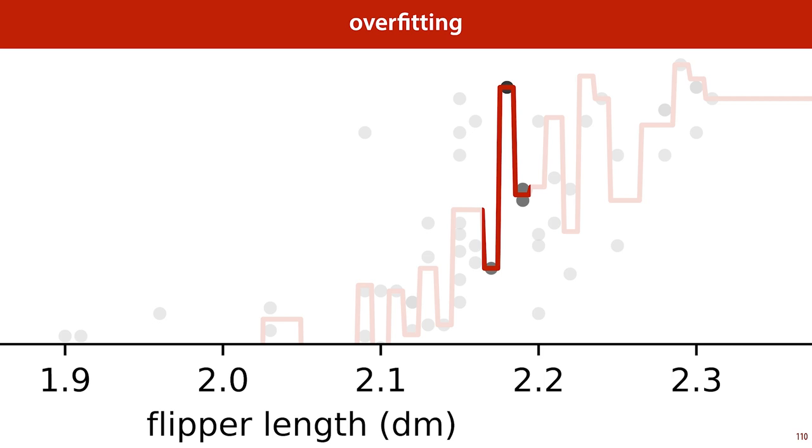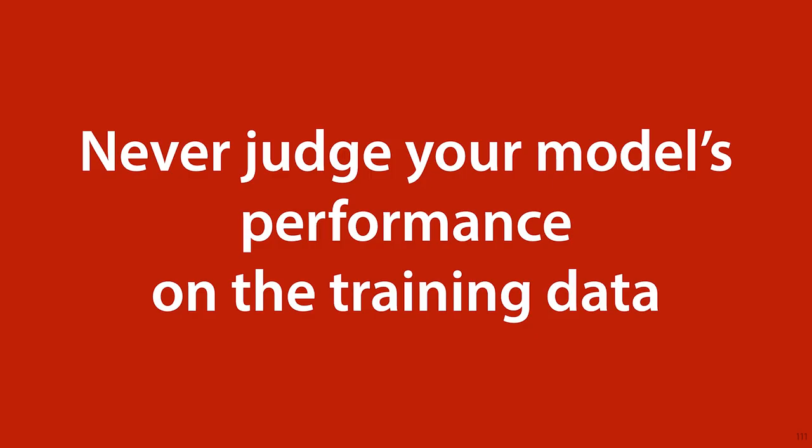The problem here is that when we're looking at how well our model is fitting the data to judge its performance, we are plotting the model over the data it was trained on. This is the most important rule in machine learning: when you're judging your model, you should never look at the training data. The regression tree had the lowest loss on the training data, but it's actually the worst model for this particular data set. It means nothing how much of the training instances the model gets right. What we actually want is a model that does well on new data — data that it hasn't been trained on.